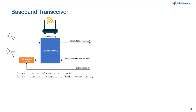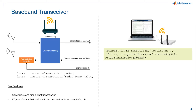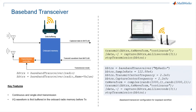This figure shows the high-level architecture of the baseband transceiver. You can create a baseband transceiver object in MATLAB to simultaneously transmit and capture IQ waveforms over the air. It uses onboard RAM to operate at maximum sample rates up to 250 mega samples per second. You can configure continuous or single-shot transmission. The transceiver provides transmit, capture, and stop transmission functions. The code shows how to use a baseband transceiver for loopback workflows — transmitting a random signal and capturing it into the MATLAB workspace.